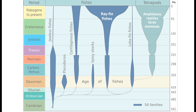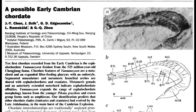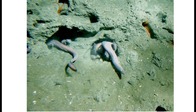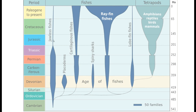Soon after, the first spinal cords developed, and with them the first vertebrates. These early vertebrates did not have jaws yet — they were jawless fishes. A few such living fossils remain today: the hagfish, a vertebrate without a jaw that lives in the deep sea, and the lampreys, which are fish parasites and also jawless fish. In the Paleozoic, these jawless fishes were abundant, filled many ecological niches, grew to larger sizes, and really thrived. They were eventually outcompeted by animals which had jaws — the jawed fishes.